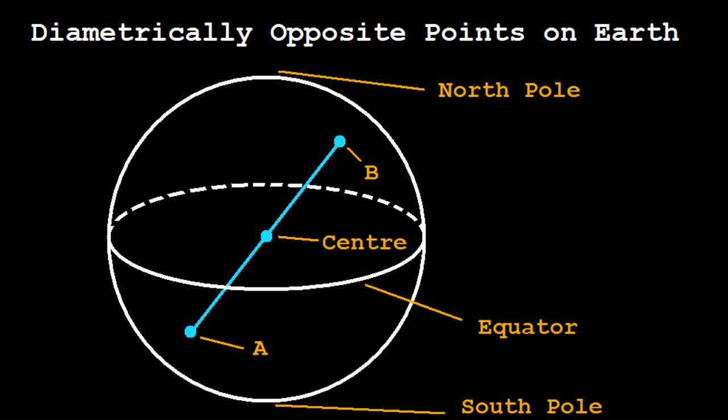What's even more baffling, and more difficult to explain, is that right now there must exist at least one opposite pair with exactly the same temperature and exactly the same atmospheric pressure.